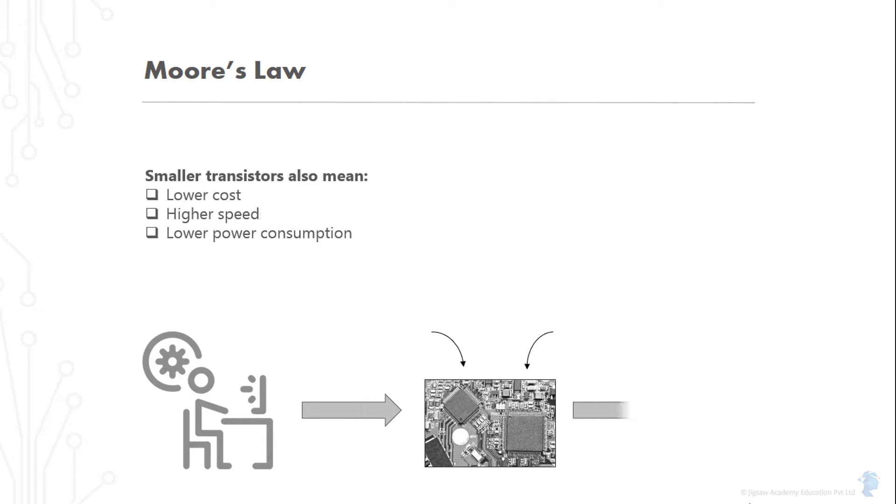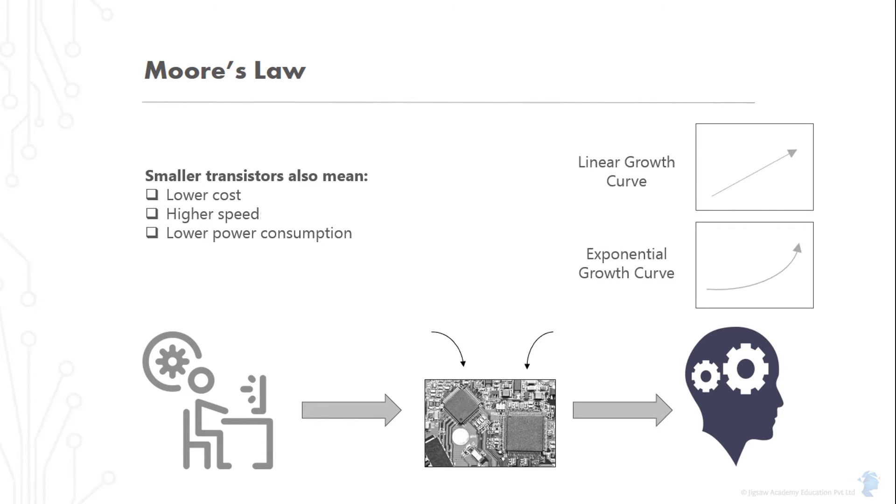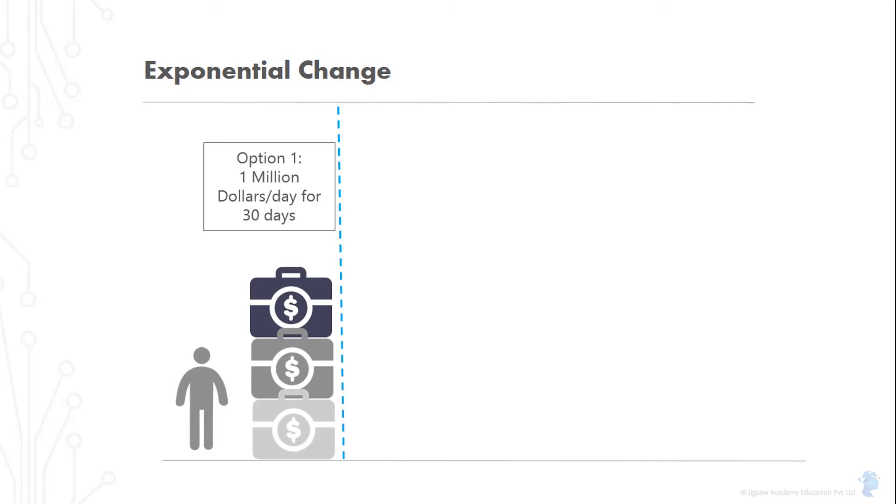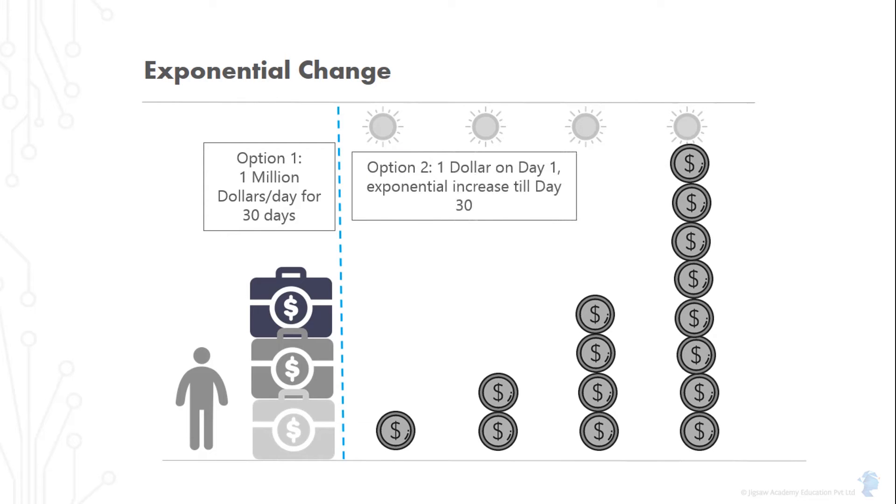It's hard for us to truly comprehend exponential change, since our brains are wired to view things in linear scale. Let's say you had a rich uncle that wanted to give you a birthday gift. He gives you a choice. He can pay you a million dollars a day for the next 30 days, or pay you one dollar on day one, two dollars on day two, four dollars on day three, and so on. That is, double the payout every day for the next 30 days. Which one would you choose?